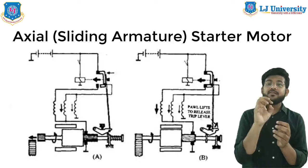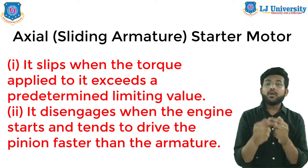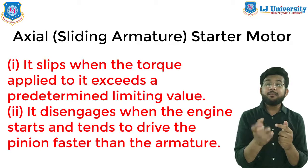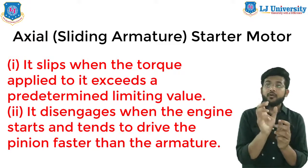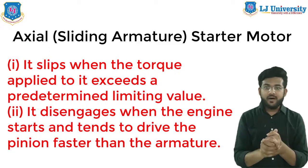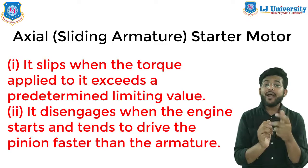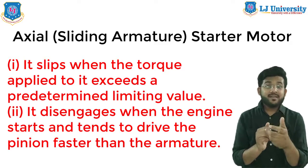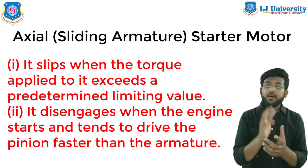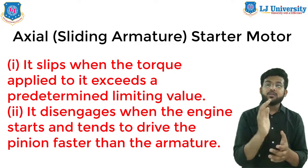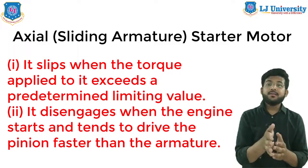The pinion joins the armature shaft through a small multi-plate clutch, which serves two functions. First, it slips when the torque applied to it exceeds a predetermined limiting value, safeguarding the starter from damage if the engine backfires. Second, it disengages when the engine starts and tends to drive the pinion faster than the armature, preventing armature damage from excessive engine speed. This concludes the axial or sliding armature type.